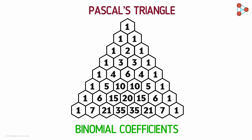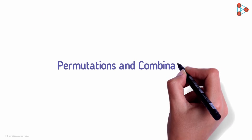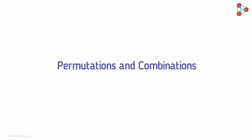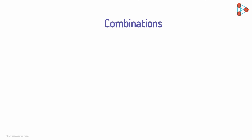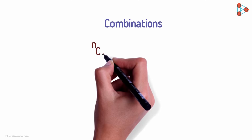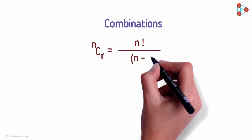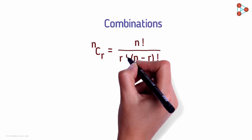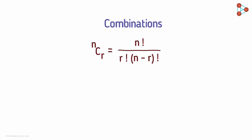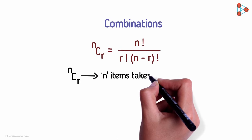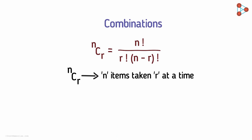The next concept we studied is permutations and combinations. We will be requiring only combinations here. The formula for combinations is: NCR equals N factorial over N minus R factorial times R factorial. NCR represents N items taken R at a time, where the order in which items are chosen does not matter.